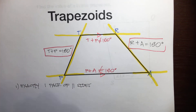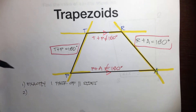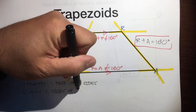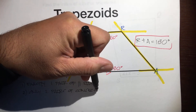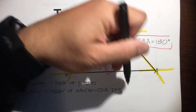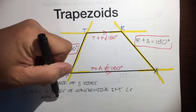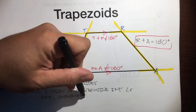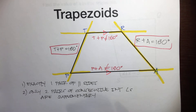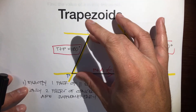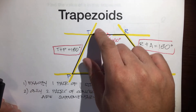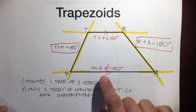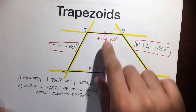Fact number two: only two pairs of consecutive interior angles are supplementary. Only the angles that are sandwiched by the parallel lines — T and P are sandwiched by the parallel lines, R and A are sandwiched by the parallel lines — so those are the only ones that add up to 180 degrees. These two are not sandwiched by parallel lines, so no.